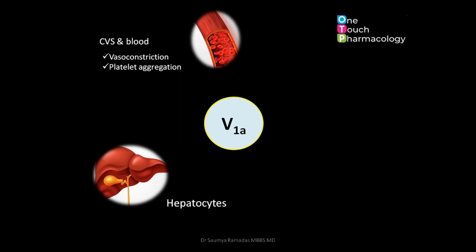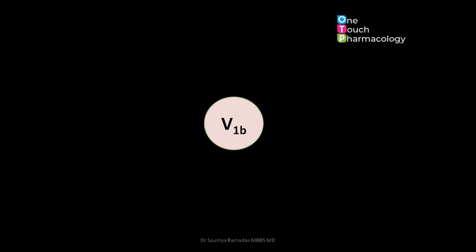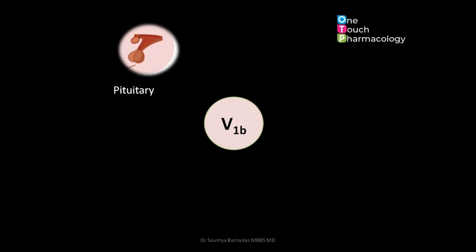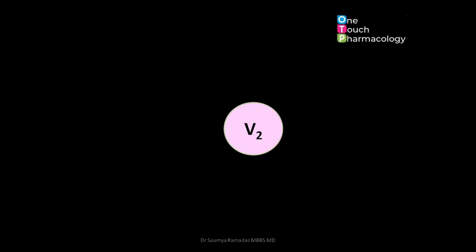V1a receptors are also present in the hepatocytes of the liver, where they cause glycogenolysis. Another important site of V1a receptors is the uterus, where they cause uterine contraction. The V1b receptors are present in the pituitary gland, where they cause release of adrenocorticotropic hormone, and in the central nervous system, where they have a role as a neurotransmitter, a pathophysiological role in depression, and act as an antipyretic factor.